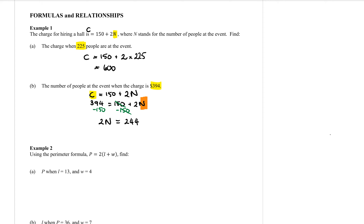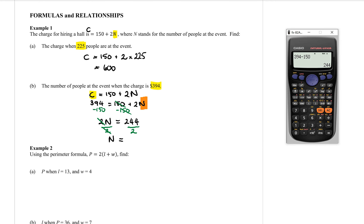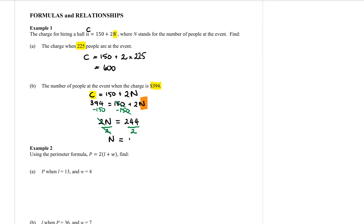Now I want to get rid of the 2. Because it's multiplied with the n, I need to divide both sides by 2. Cross those ones off — n is now by itself. On the calculator, I need to divide 244 by 2. So that makes 122 people. So if there are 122 people at an event, it would cost $394.